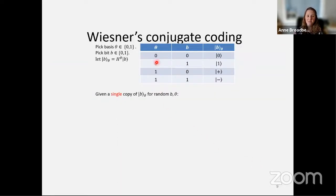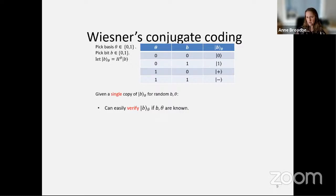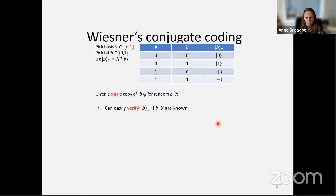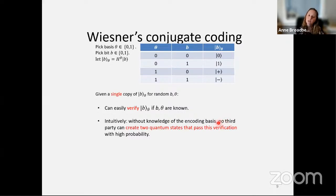Wiesner's conjugate coding: we pick a basis theta, which is a bit, and a bit b, and use the notation b_theta — either the bit b encoded in the computational basis or in the diagonal basis. The intuition is that if you have a single copy of b_theta where b and theta are unknown, if you're the originator you know b and theta, so it's easy to verify — measure b_theta in the theta basis and expect to see bit b. If you don't see b, you can reject.